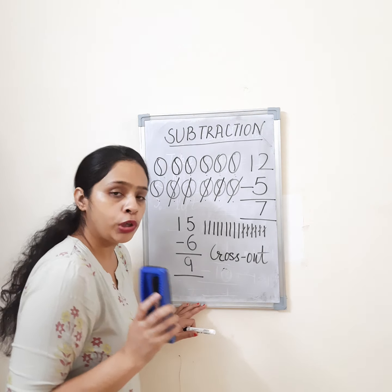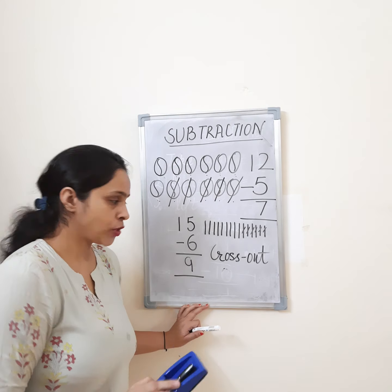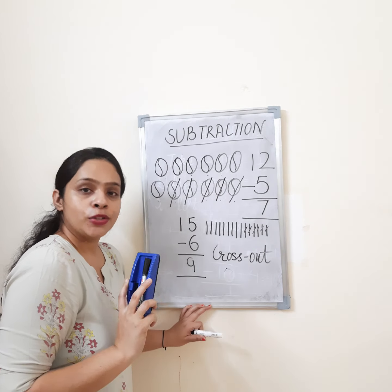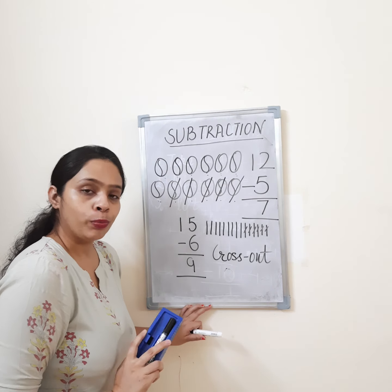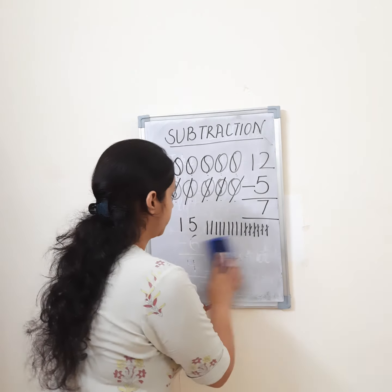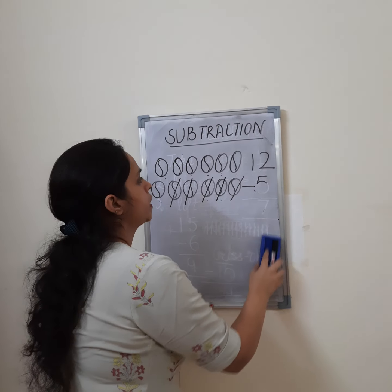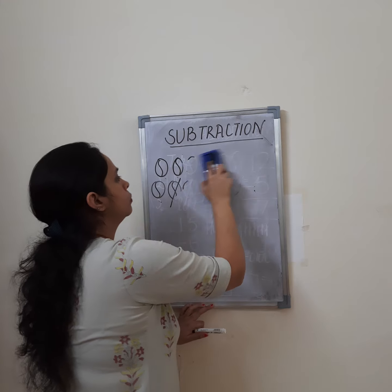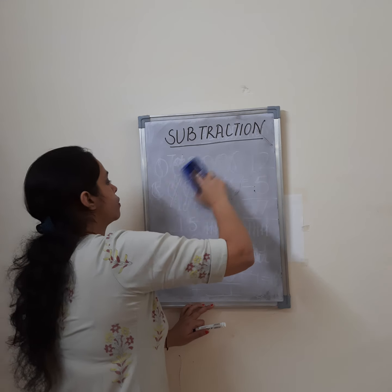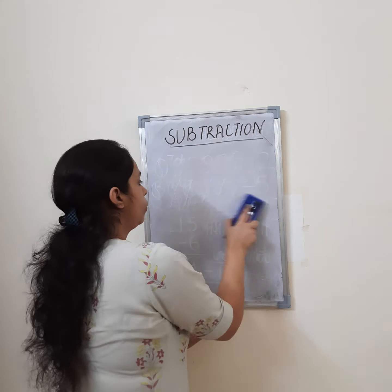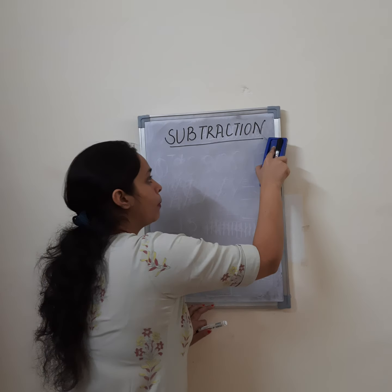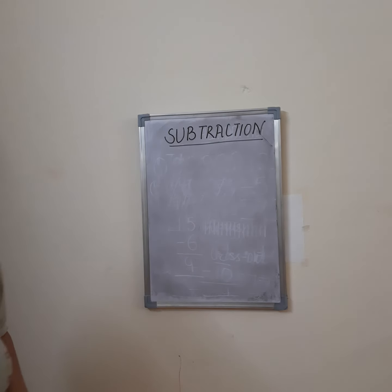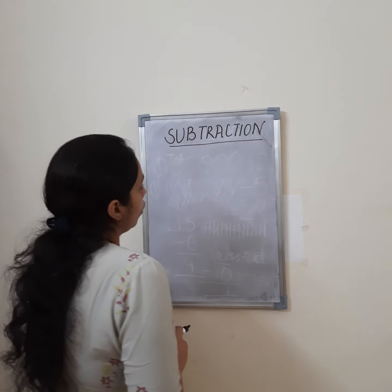As I told you earlier, when we do subtraction the bigger number comes on top. The smaller number does not go on top. So if you are confused — can you do 9 minus 12? No. The number ma'am says first must be the bigger one.